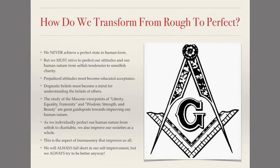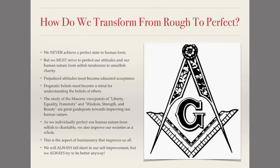So how do we get there? How do we transform from rough to perfect? We never achieve a perfect state in our human form — this is impossible. We will always be mostly the rough Ashlar. We become more perfect as we learn our shortcomings and transform those into strengths, but we'll never achieve that perfect cube. We must always strive to perfect our attitudes and our human nature, from selfish tendencies to unselfish charity. Prejudiced attitudes must become educated acceptance. Dogmatic beliefs must become a mind for understanding the beliefs of others — not necessarily always accepting them, but always being able to understand them.